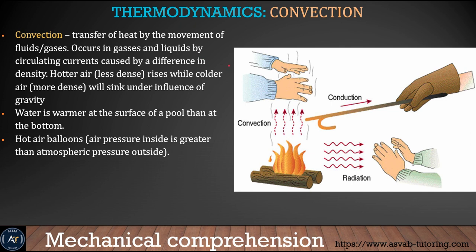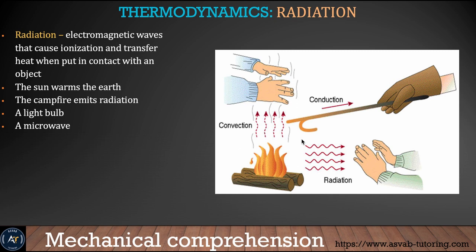Convection is heat transfer by the movement of a fluid. Radiation is the electromagnetic wave that ionizes and transfers heat when it contacts an object. We get heat and light from the sun because of radiation. Examples of radiation sources include campfires, light bulbs, and microwaves.